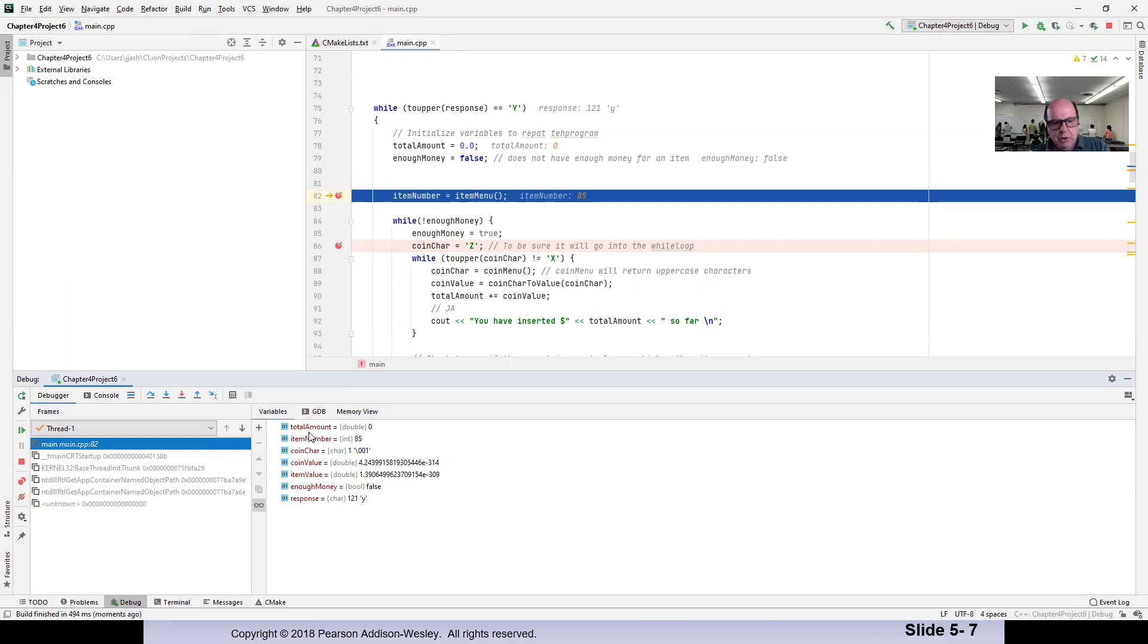So you can see my total amount is zero. My item number is 85 for some reason. My coin is one, coin value and so on and so forth. So all of those variables are going to be here.